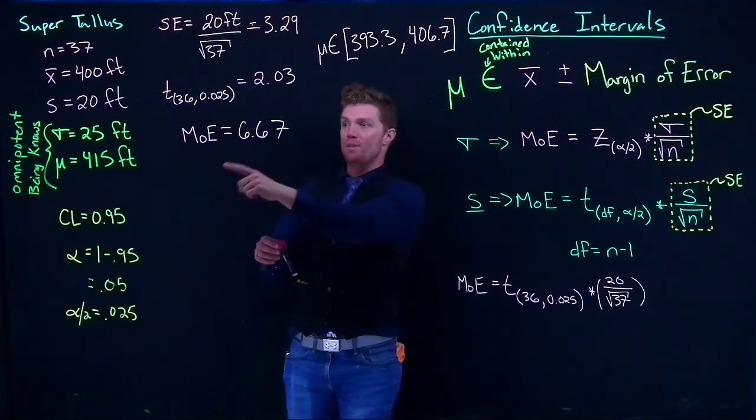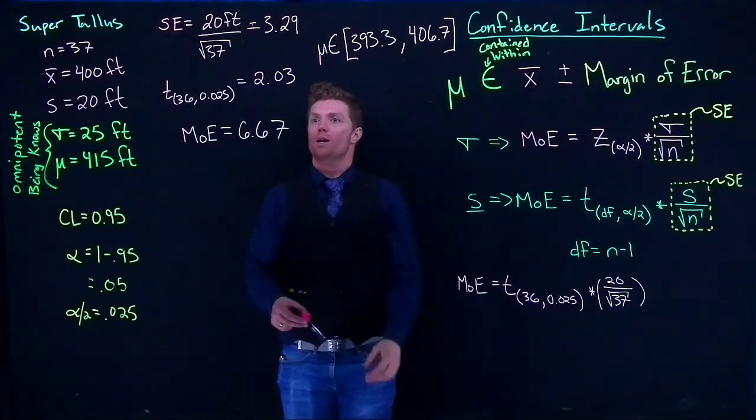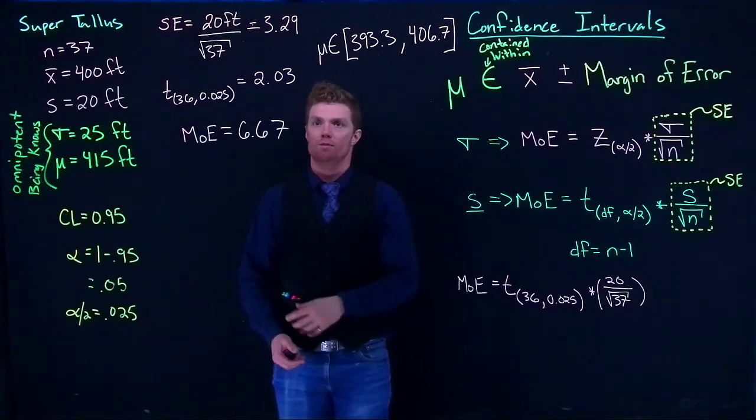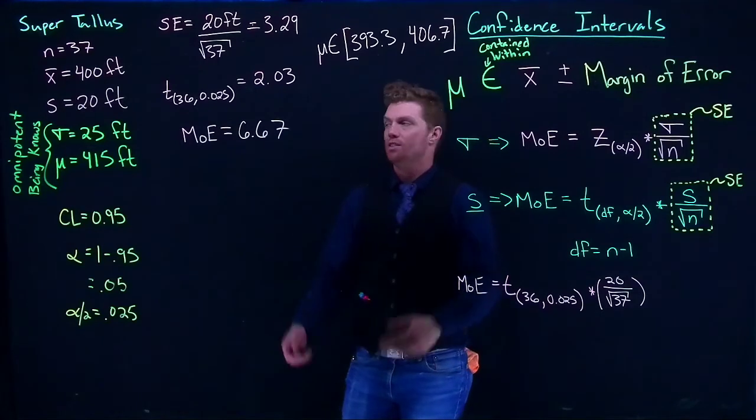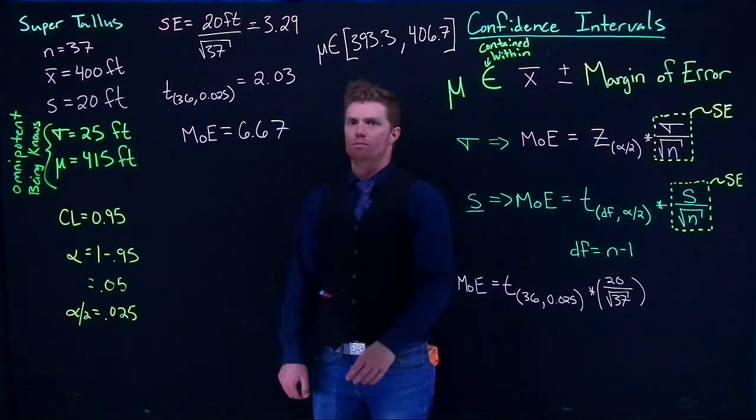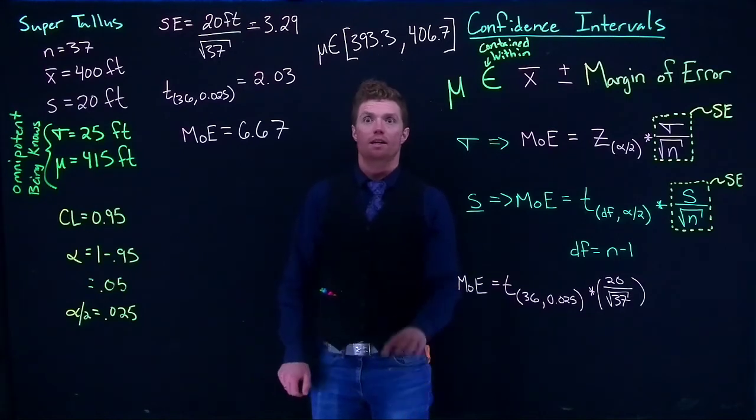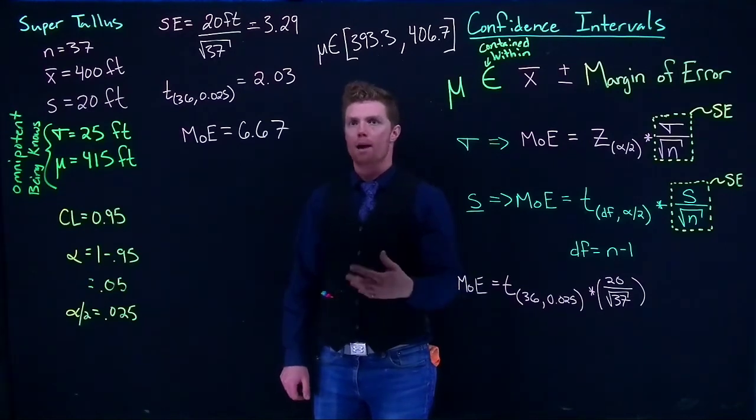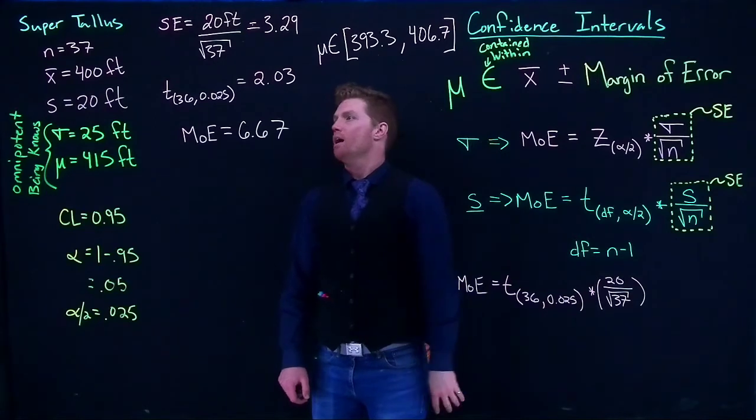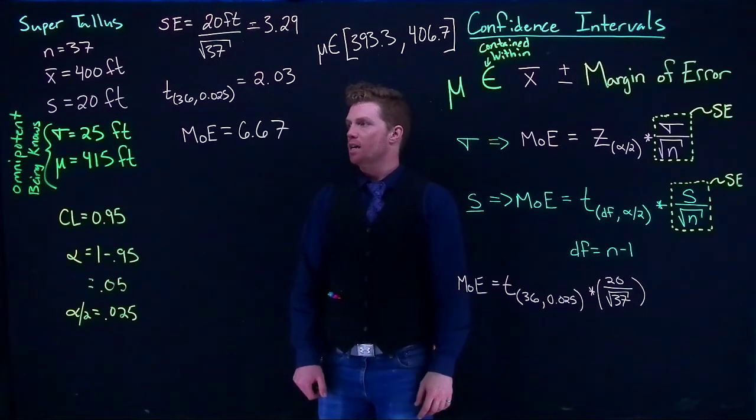Once again, it missed it, but that's okay. Remember, occasionally our confidence intervals do miss. Maybe if we were to take another sample of 37, well, if we kept using this method at our 95% confidence level, 95% of the time we should be capturing the true population mean and only missing it about 5% of the time.